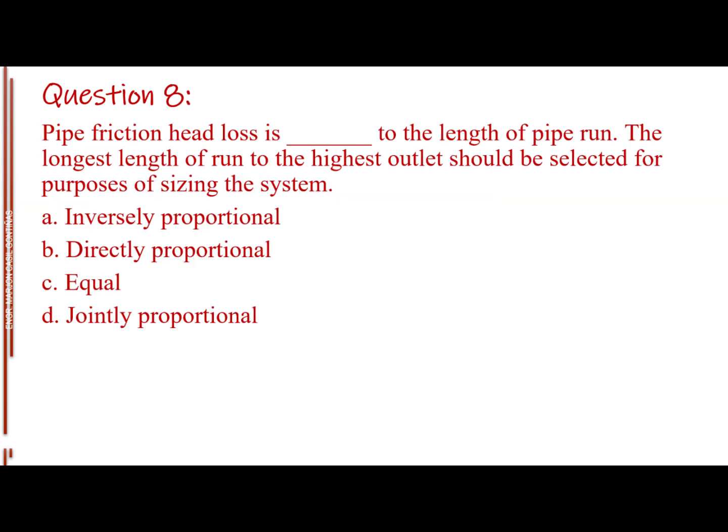Question number 8. Pipe friction head loss is blank to the length of pipe run. The longest length of run to the highest outlet should be selected for purposes of sizing the system. Letter A, inversely proportional. Letter B, directly proportional. Letter C, equal. Letter D, jointly proportional. The answer is letter B, directly proportional.